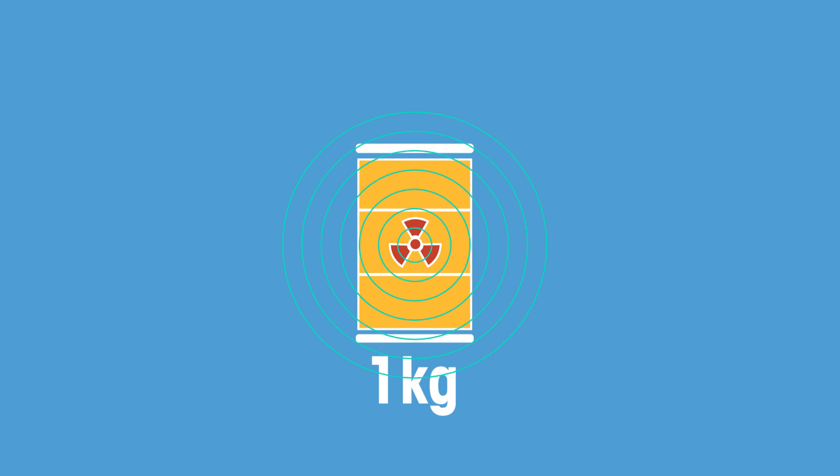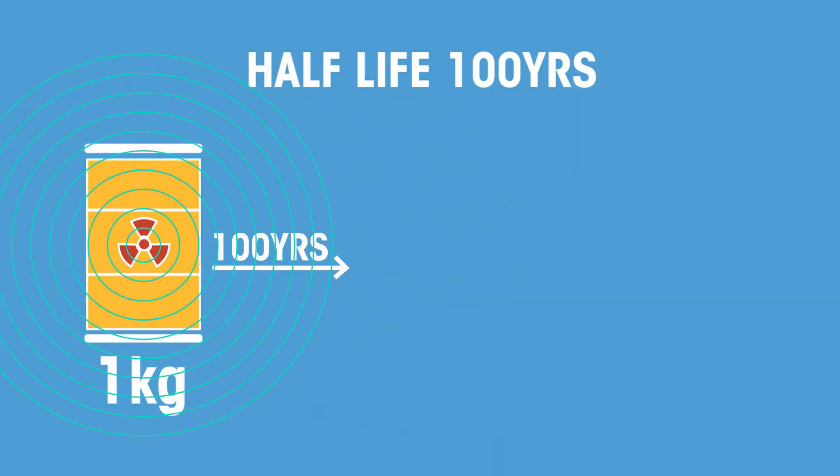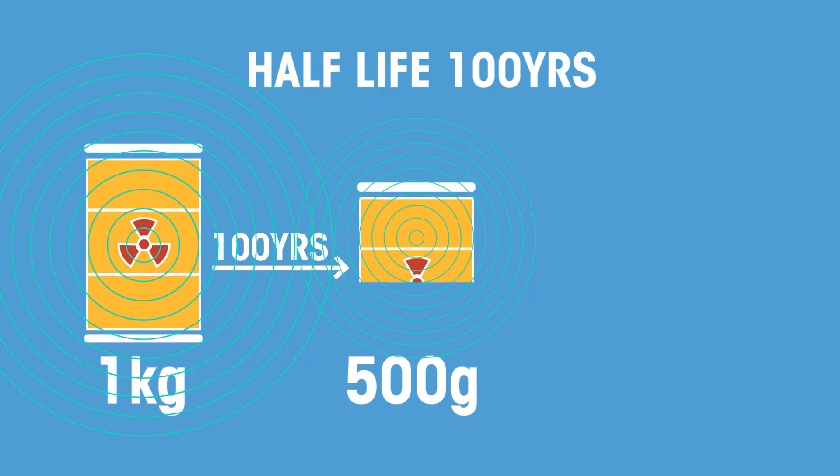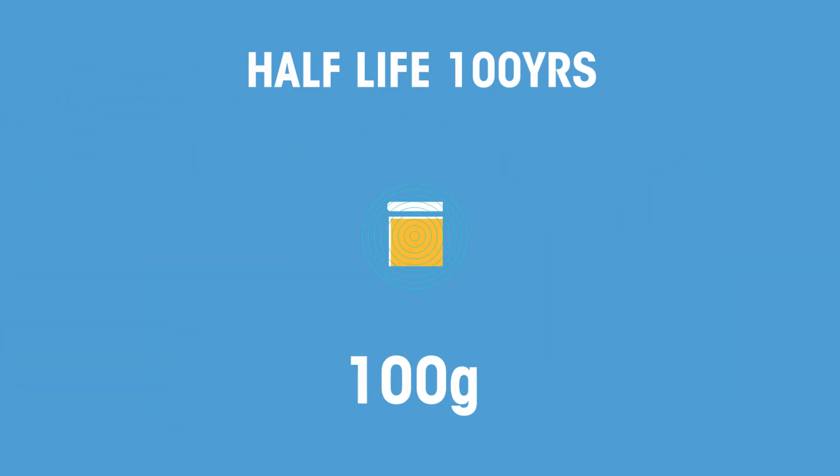If we start off with a kilogram of radioactive waste that has a half-life of 100 years, after 100 years we will have 500 grams of radioactive waste. After another 100 years, there will be 250 grams of it, and so on. Eventually, the amount of radiation will decrease until it reaches the same level as background radiation.